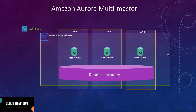Like in a single master cluster you can have 15 read replicas, but in Multi-Master you can have four DB instances at a time. At the time of recording it may go to five or six in the future, but right now you can have only four DB instances.